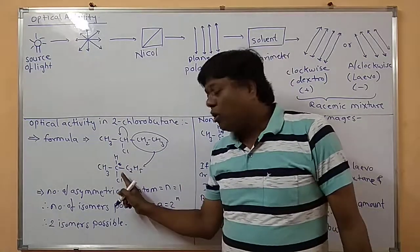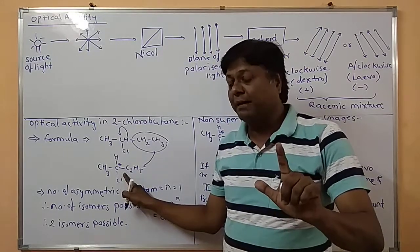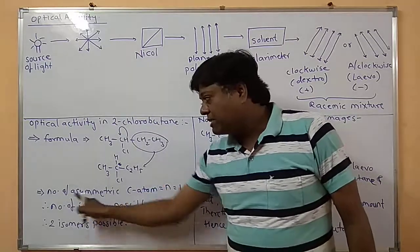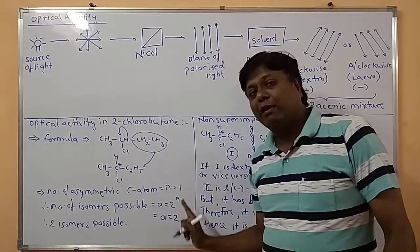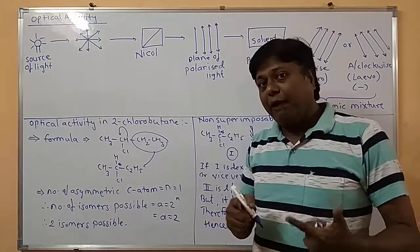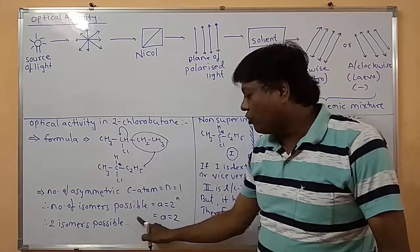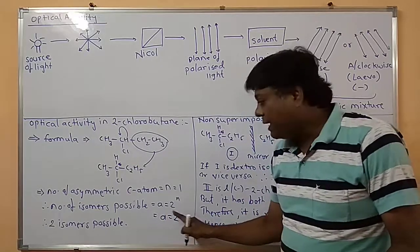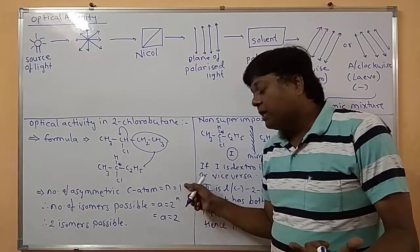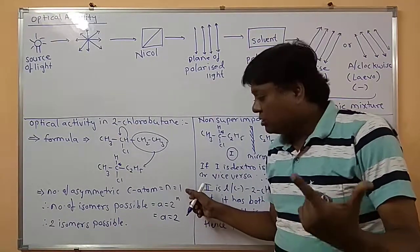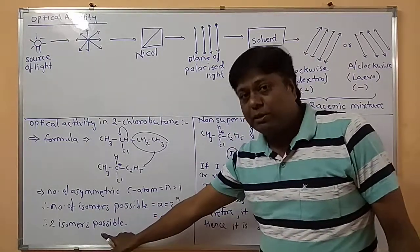The center carbon can also be called a chiral carbon atom. Here only one asymmetric carbon atom is present, so N equals 1. To find the number of possible isomers, the formula is A = 2^N, where A is the number of isomers possible and N is the number of asymmetric carbon atoms. So the number of possible isomers is 2.